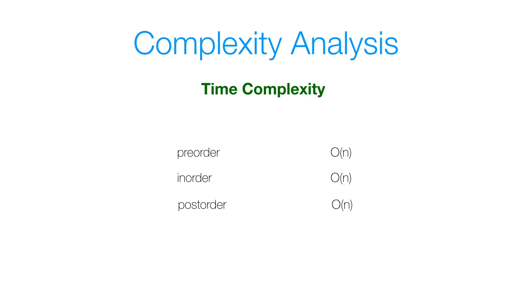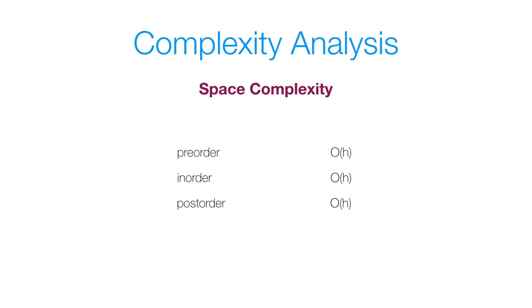Now let's take a look at the complexity analysis for these operations. For the time complexity, all of these methods take linear time O(N), because we're traversing every single node in our binary tree, which contains N nodes. For the space complexity, our big O will be in terms of H, the height of the tree, because the maximum number of stack frames in the call stack for each of these methods is based on the height — equivalently the depth — of the tree. We traverse as far down a path as we can before we pop a stack frame off the call stack.